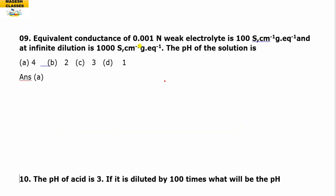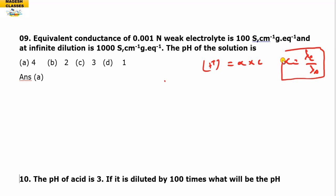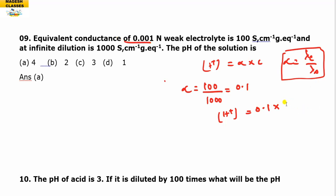Question 9: The equivalent conductance of a 0.001 N weak electrolyte is 100 S·cm²·g-eq⁻¹, and at infinite dilution it is 1000 S·cm²·g-eq⁻¹. To find pH, we calculate H⁺ = alpha × C, where alpha = λ_C / λ_∞ = 100/1000 = 0.1. So H⁺ = 0.1 × 10⁻³ = 1×10⁻⁴. Therefore pH = 4. Answer is A.